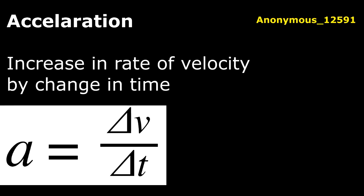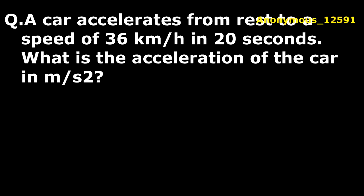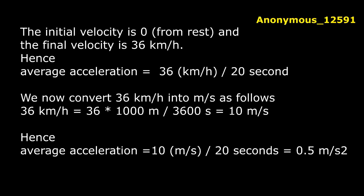The question is: a car accelerated from rest to a speed of 36 kilometers per hour in 20 seconds. What is the acceleration of the car in meters per second squared? In this question, it is given that you have to convert kilometers per hour into meters per second. Initial velocity is zero, means it is at rest, that's why it is zero. And final velocity is 36. So acceleration we know: 36 divided by 20 seconds equals acceleration.